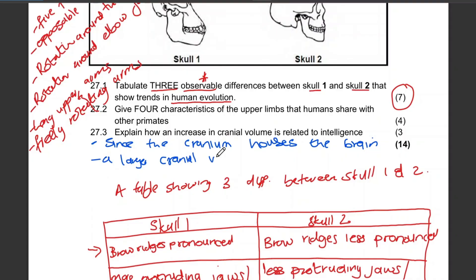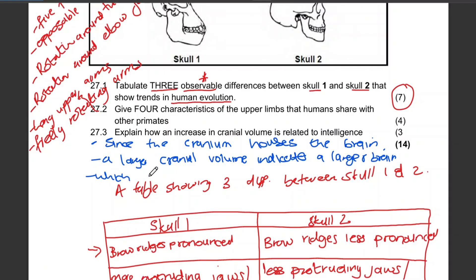A larger cranial volume indicates a larger brain or more brain cells, which suggests greater intelligence. That's it.